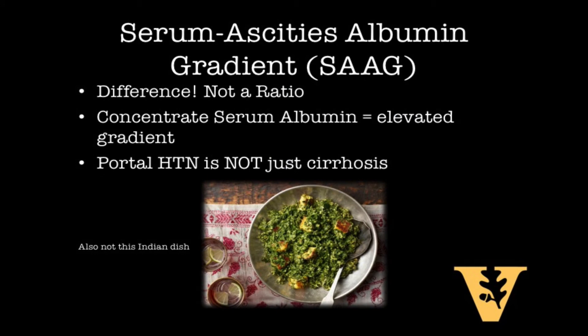Unlike most calculations in medicine, in this equation you subtract the numbers to obtain the difference, as opposed to finding a ratio. To calculate your SAAG, you take your albumin level within the blood serum and you subtract the albumin level within your ascitic fluid. That will give you your SAAG value. If you have a SAAG greater than 1.1, this suggests portal hypertension.